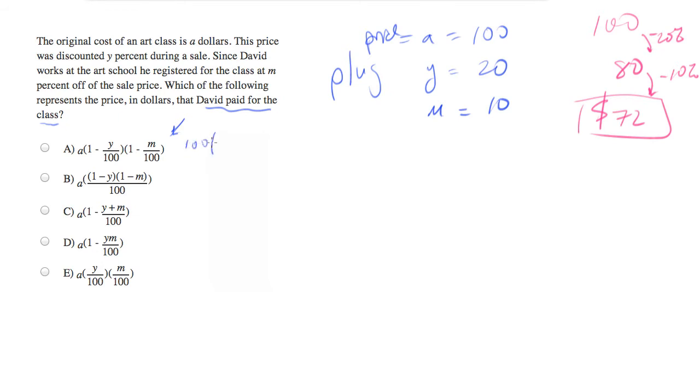A is 100 times (1 minus 20 over 100) times (1 minus 10 over 100). That's 100 times 0.8 times 0.9. I'm going to plug this into my calculator. And I get my answer, 72. Wow, that was lucky. So I'm hoping this is going to be the answer.